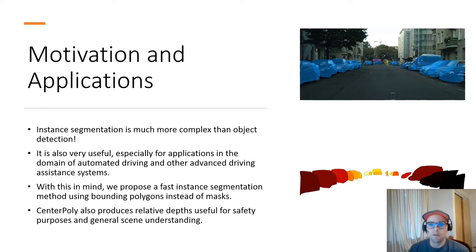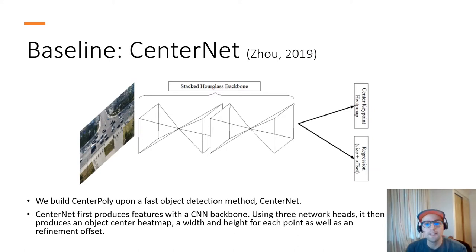As a baseline for our model, we use the object detection method CenterNet, which detects objects by their center keypoint. So CenterNet first produces features with a CNN backbone. It can be a ResNet or a Stacked Hourglass backbone. Then using three network heads, it produces an object center heatmap, a width and a height for each point which produces the bounding box, as well as a refinement offset for when we upsample the final feature map into an image.